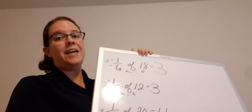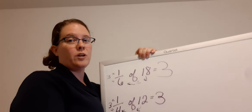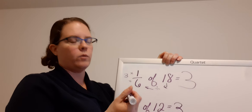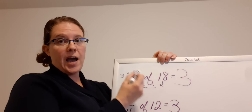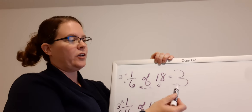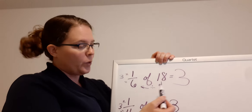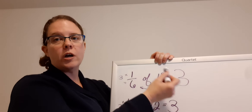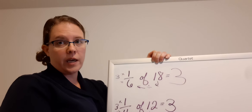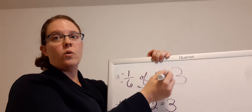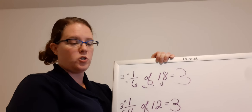So that's a review. Now today we're going to kind of work backwards. We're going to know our fraction and we're going to know our answer. We've got to figure out how much of something is — we need to know the total amount of something. So I'm going to show you how to do that.